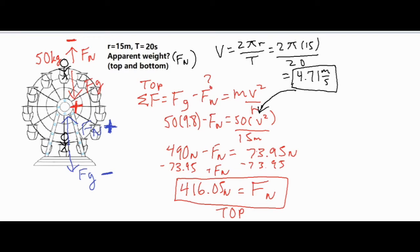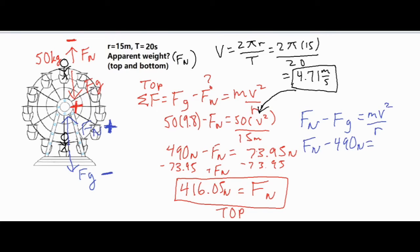At the bottom it's very similar, but now the normal force is the centripetal force pointing toward the center, so FN is positive and fg is negative: FN − fg = mv²/r. Since we already know fg = 490 newtons and mv²/r = 73.95 newtons, we just add 490 to both sides, giving us a normal force of 563.95 newtons at the bottom.